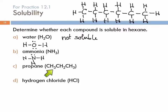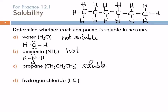How about propane? Propane is nonpolar. Hexane is nonpolar. Those are alike, so propane will be soluble in hexane. How about hydrogen chloride, HCl? It's polar — there's only one bond and it's a polar bond, so the whole molecule is polar. Polar versus nonpolar — not alike, so HCl is not soluble in hexane.